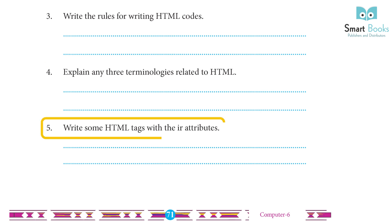5. Write some HTML tags with their attributes. Answer: Empty tag – a tag that only contains an open tag and no closing tag is called an empty tag. For example, BR, HR, and many more.